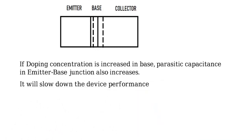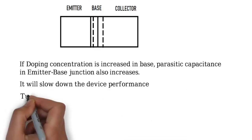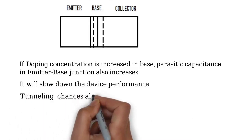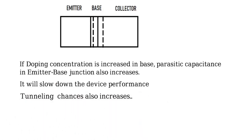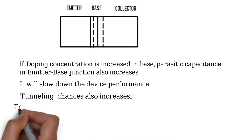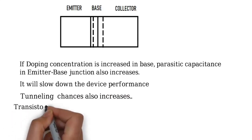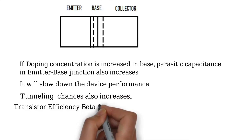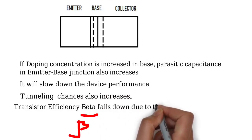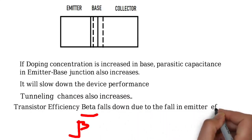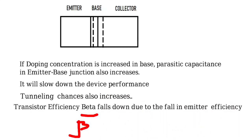Another important point: tunneling chances also increase. Also, the emitter efficiency and the beta of the transistor fall down due to the fall in emitter efficiency.